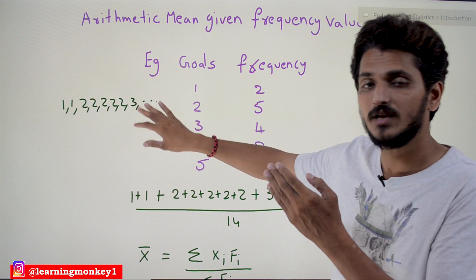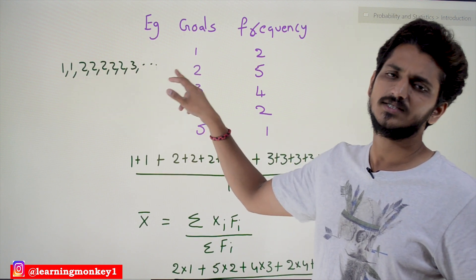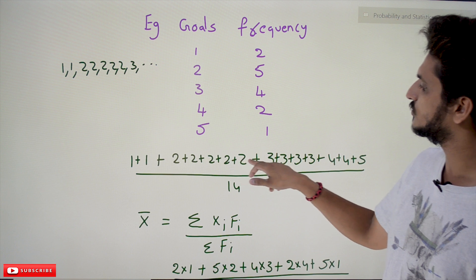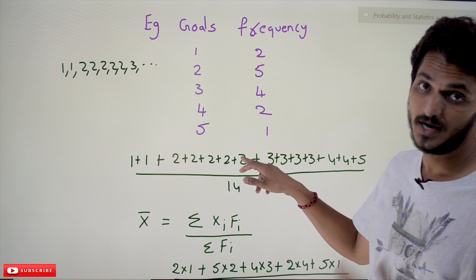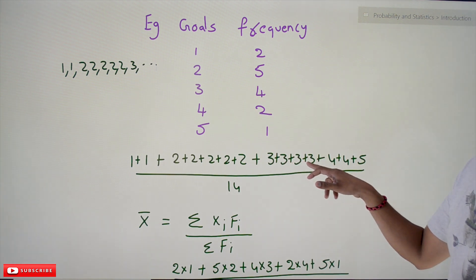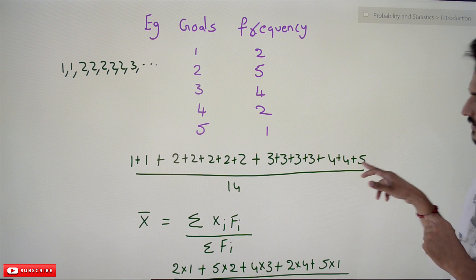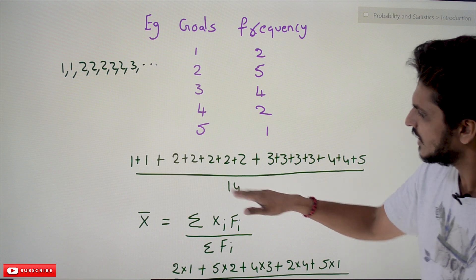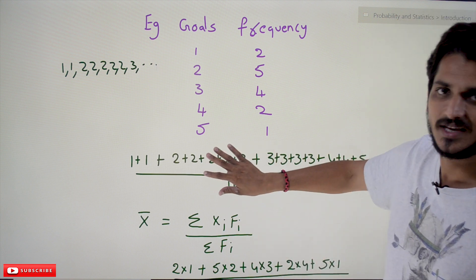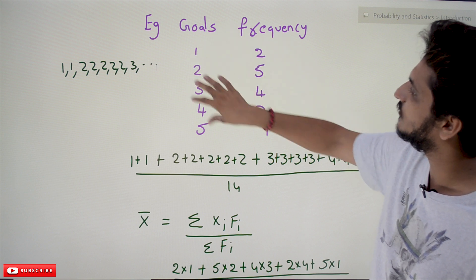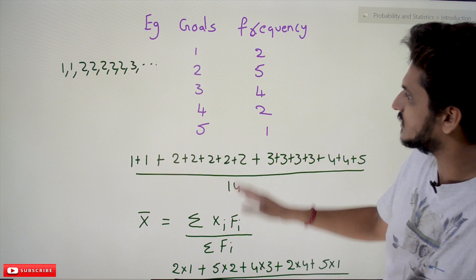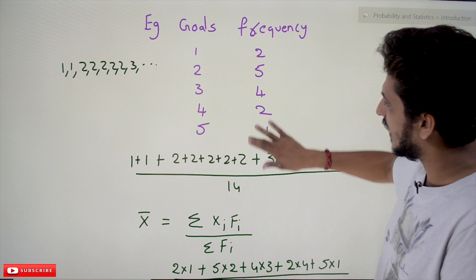To calculate arithmetic mean for this data, we add all values and divide by the number of players: (1+1 + 2+2+2+2+2 + 3+3+3+3 + 4+4 + 5) / 14. The same data in frequency form gives the same result using the frequency-based arithmetic mean formula.